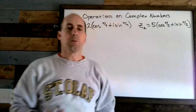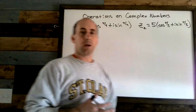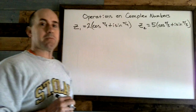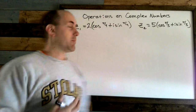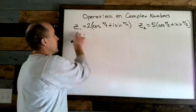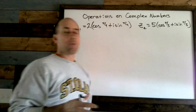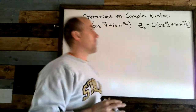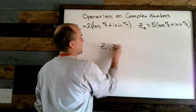Today we're going to do an easy part of the lesson and a little bit more complicated part. It's operations on complex numbers, and we're working on this both days this week. We have two complex numbers: z₁ is 2 times (cosine of π/4 plus i sine of π/4), and z₂ is equal to 5 times (cosine of π/3 plus i sine of π/3).